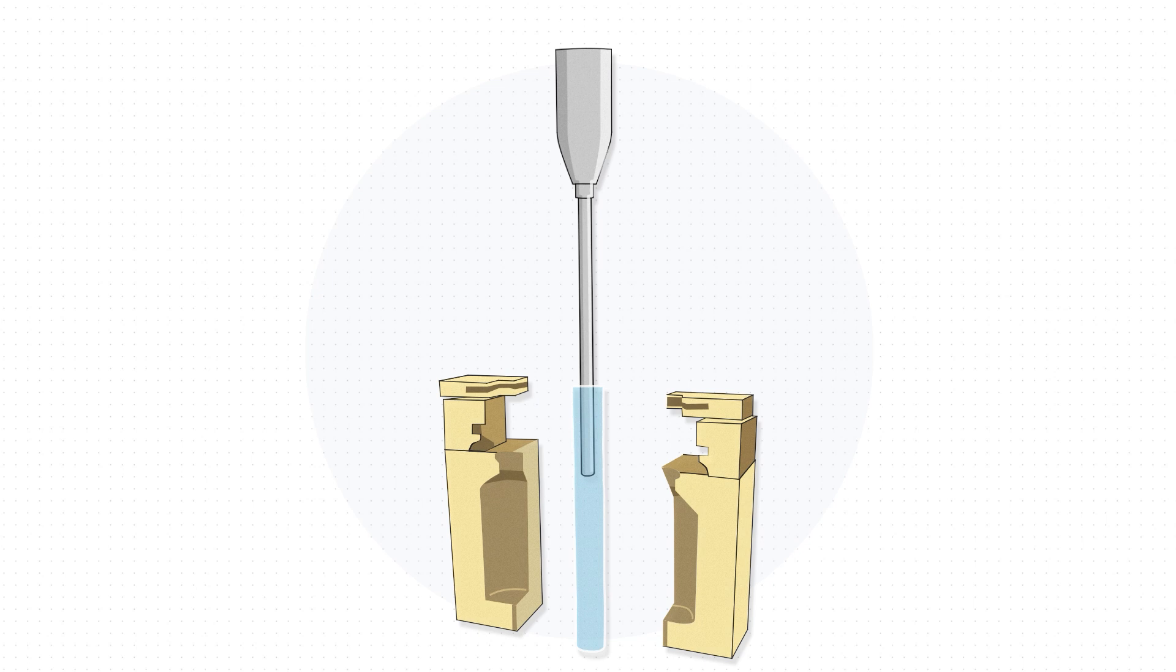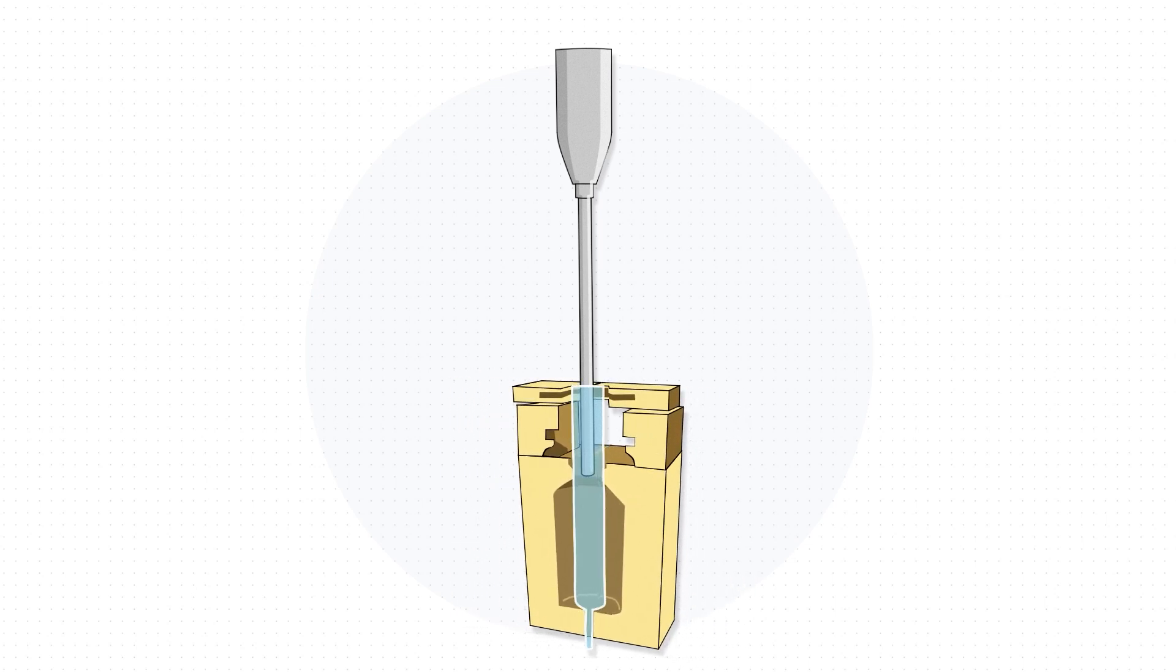This all comes together as the BFS mold closes around the resin and mandrel. The mold forms the liquid resin into the shape of the container. As the liquid resin touches the mold, it rapidly cools, turning the resin into its final solid form.